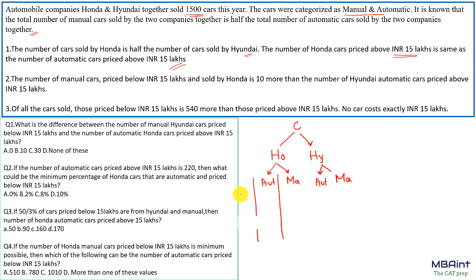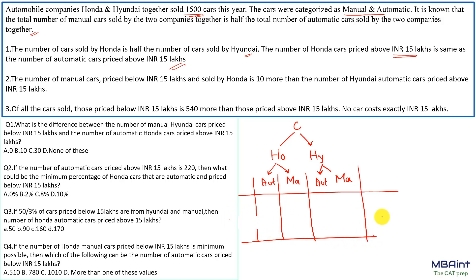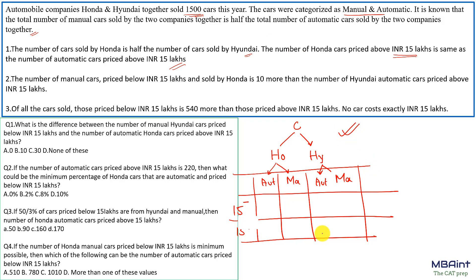Similarly for Hyundai it could be automatic or manual, and there are two types of pricing: below 15 lakhs or more than 15 lakhs. We can draw a table with these categories. This is one way of solving this set — using a tabular method.